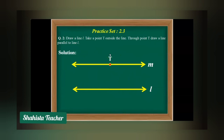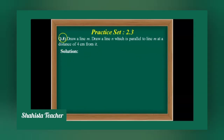Is that clear? In this way we finish question number two and question number one of Practice Set 2.3. Now the last question — question number three of this practice set. Let's solve it. Draw line M, then draw line N which is parallel to line M at a distance of 4 cm from it.